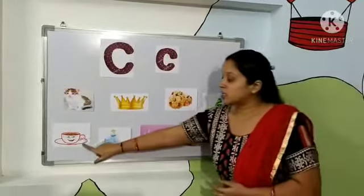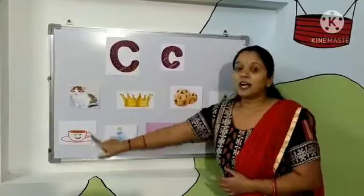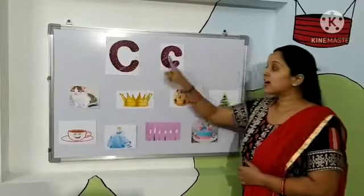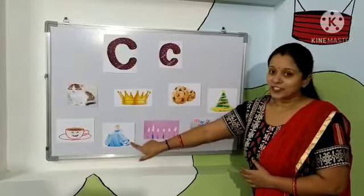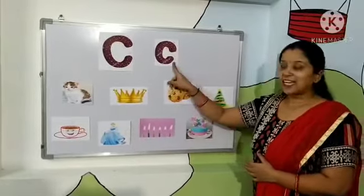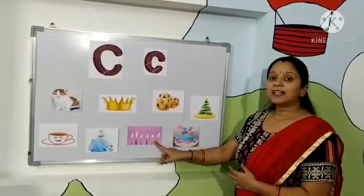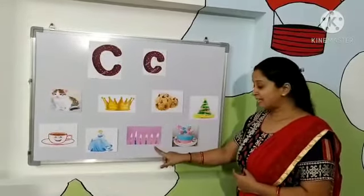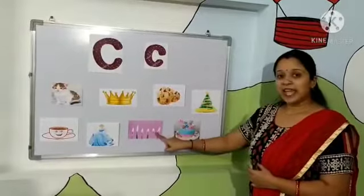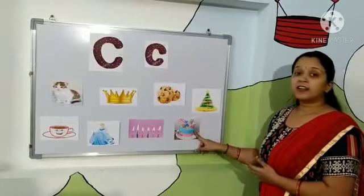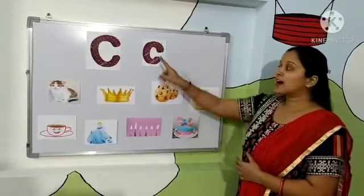Let's see the other one. This is a cup. C for cup. Cup starts from letter C. And the next one is princess Cinderella. Cinderella starts from letter C. C for Cinderella. So these are candles. C for candles. Candle starts from letter C. And the last one is a cake. C for cake. Cake starts from letter C.